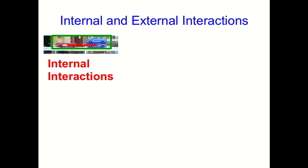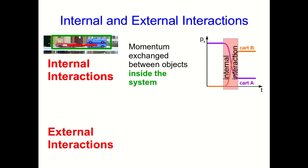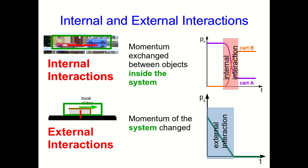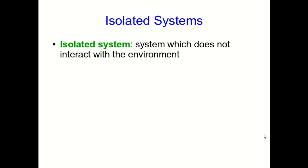It's important to notice the difference between what internal and external interactions do to a system. The internal interactions, in our case of two carts, are causing the carts to exchange momentum. They affect each other's momentum, but the total momentum of the system doesn't change. It just gets moved around inside the system. On the other hand, if we think about a system like the book sliding across the floor where there's a strong external interaction, we've already seen that that strong external interaction causes the whole momentum of the system to change.